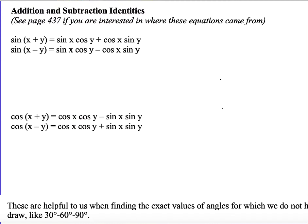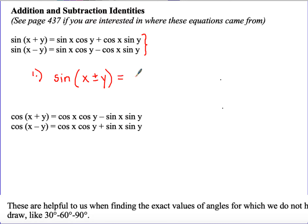We're going to look at the addition and subtraction identities, listed on page 437. You may want to write these on the back of your green sheet. The first one: sine of x plus y equals sine x cosine y plus cosine x sine y. For subtraction, only the sign changes: sine x cosine y minus cosine x sine y. On your green sheet, you can write sine of x plus or minus y equals sine x cosine y plus or minus cosine x sine y.